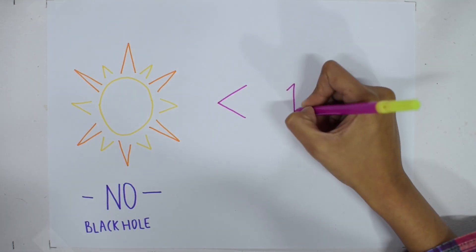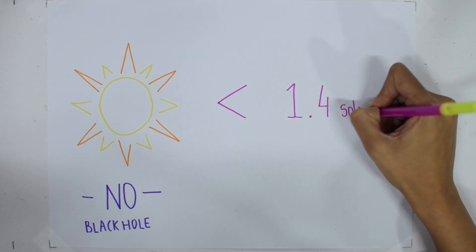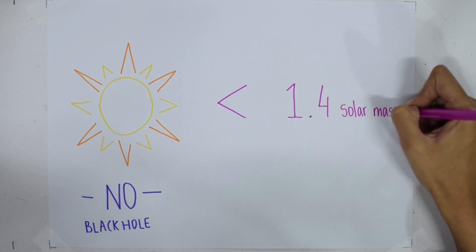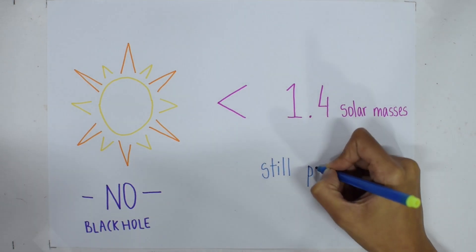Our sun, however, is well below this limit, and when it does grow old and die, it will become an ordinary white dwarf that slowly loses its energy. Not a spectacular explosion maybe, but still pretty cool.